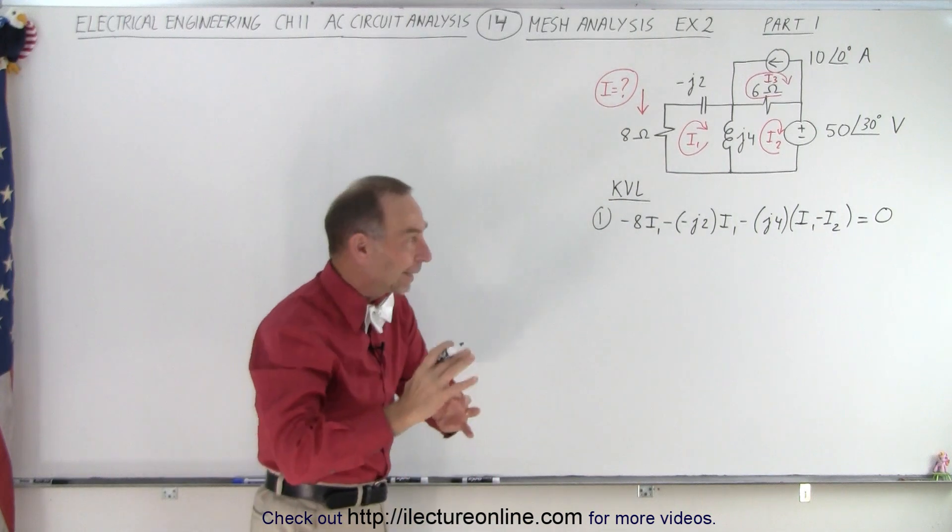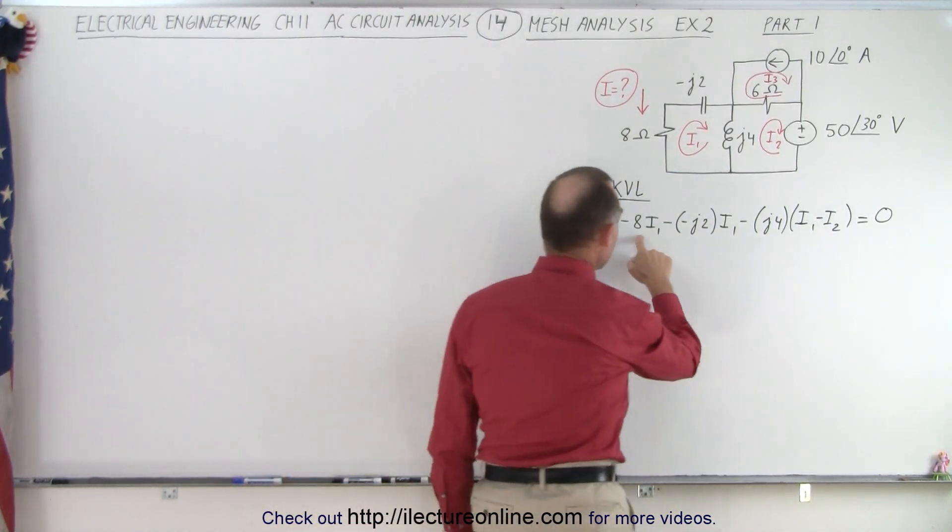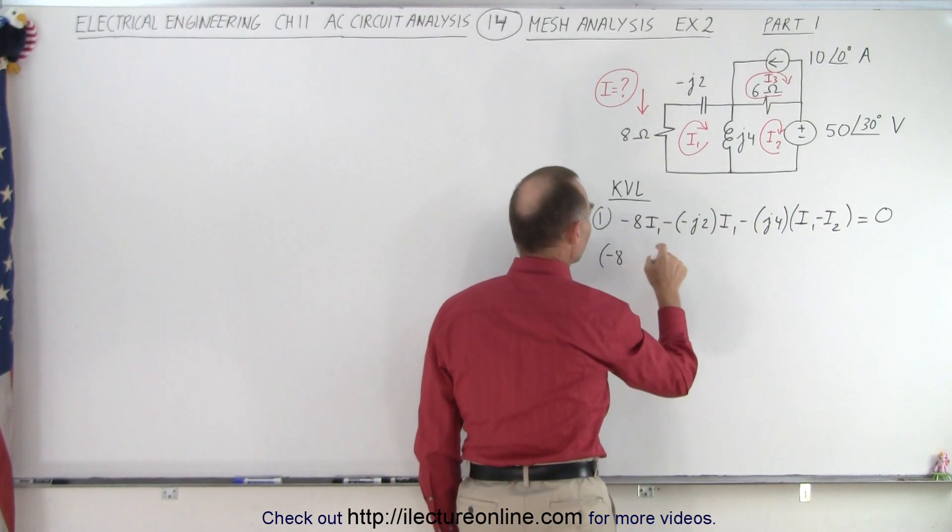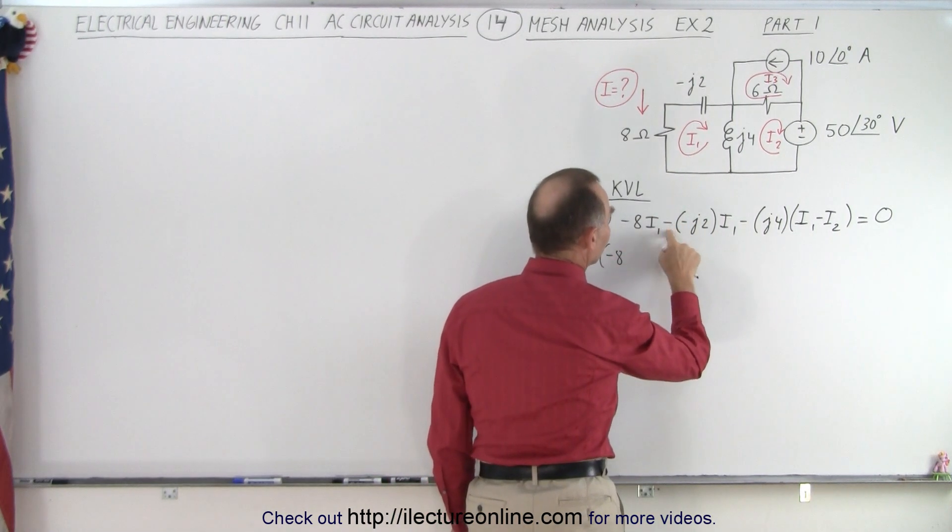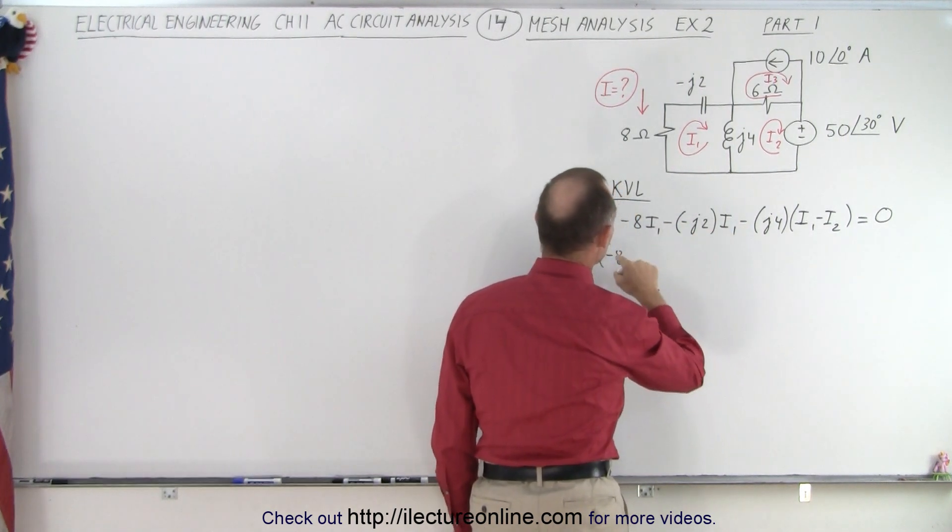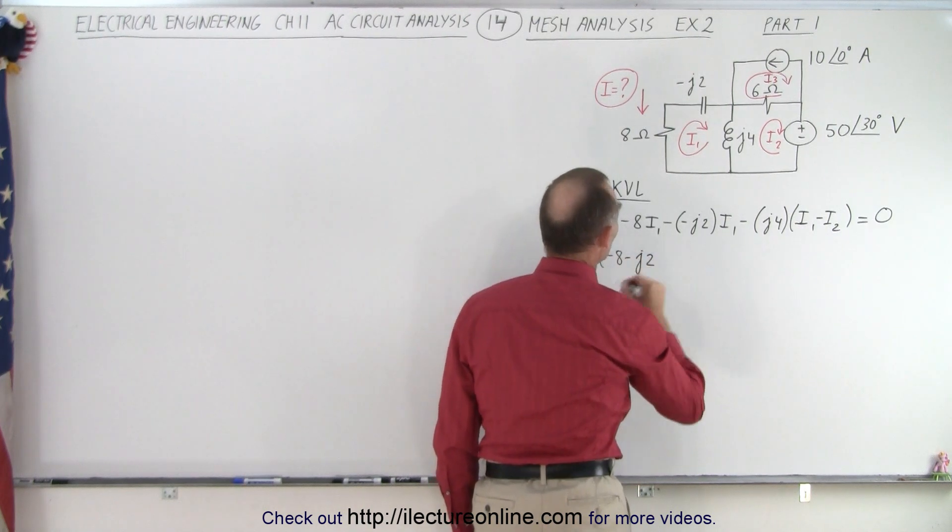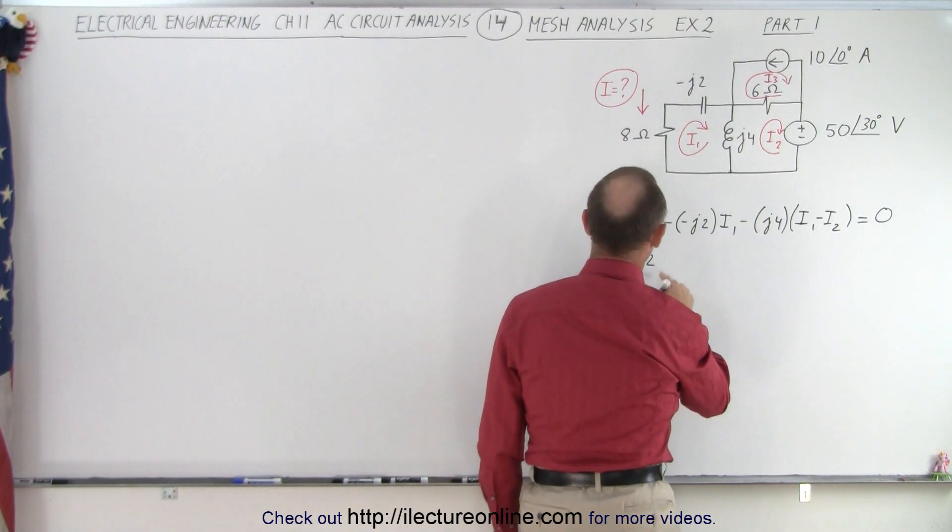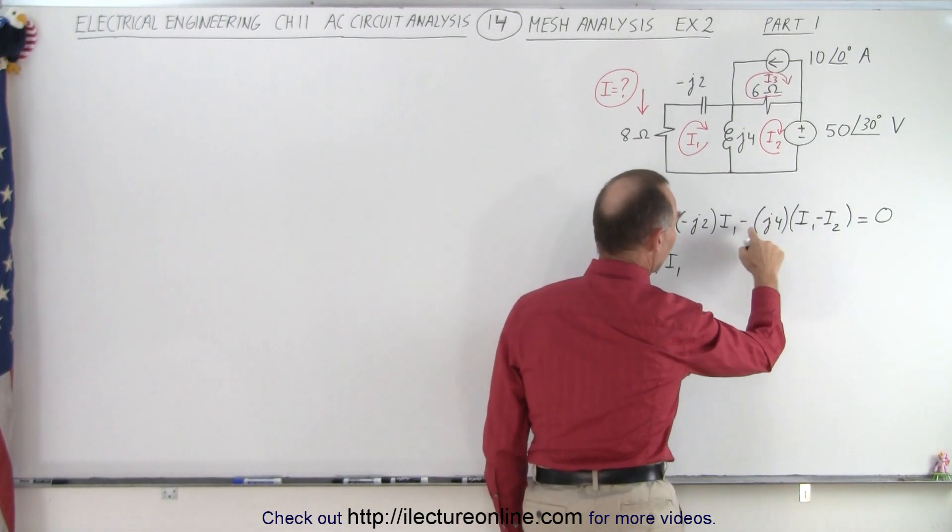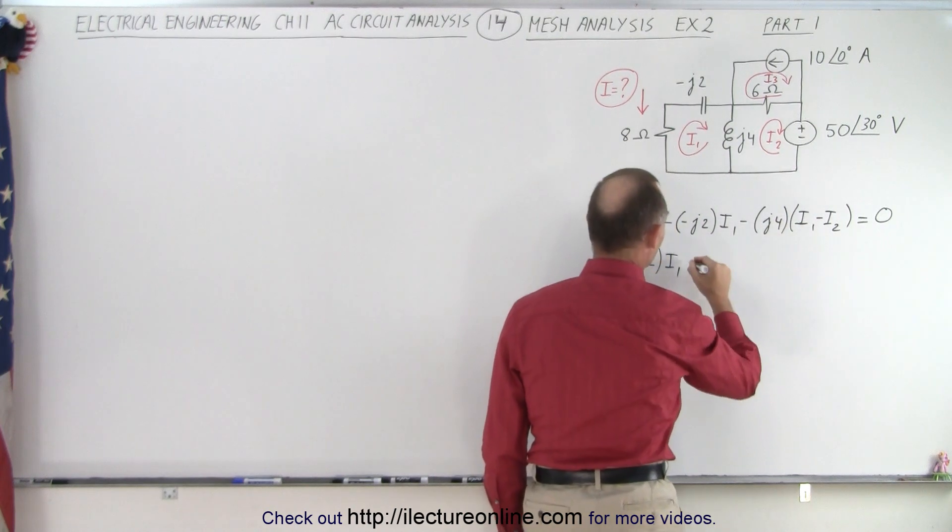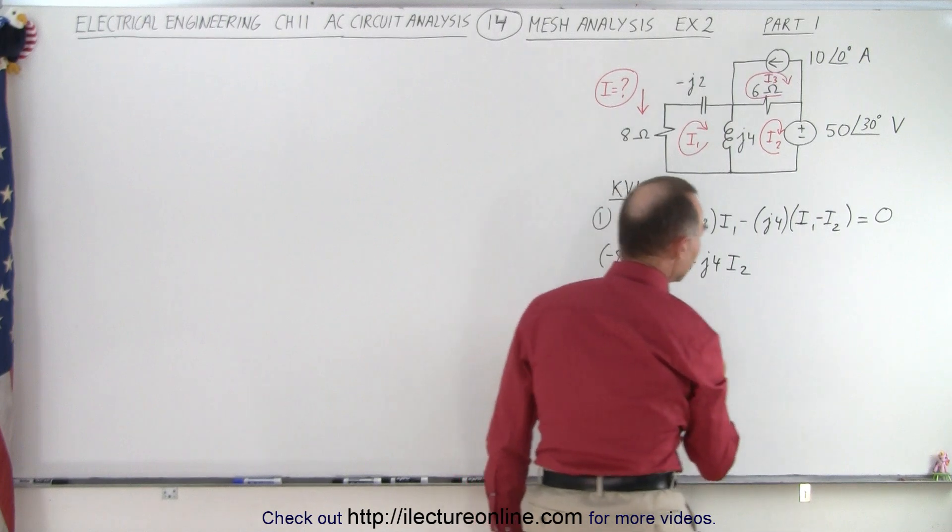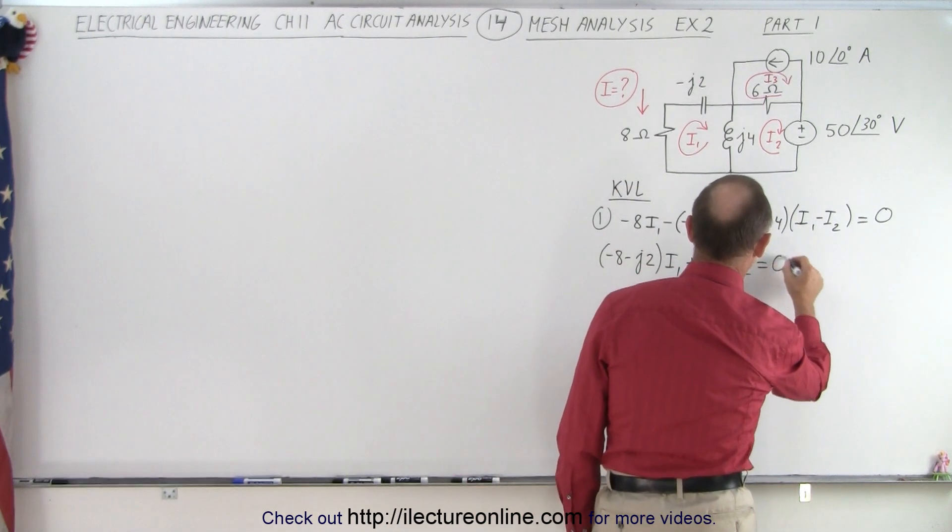Now of course we want to combine all the currents. We have I1 here, here, and here. So for I1 we have a minus 8, a minus times a minus becomes a plus J2, and a minus J4 becomes a minus J2. So that would be 8 minus J2, and that would be times I1. And then we have one I2 right here, so we have a minus J4 times a minus, that becomes a plus J4 times I2, and that then would add up to zero.